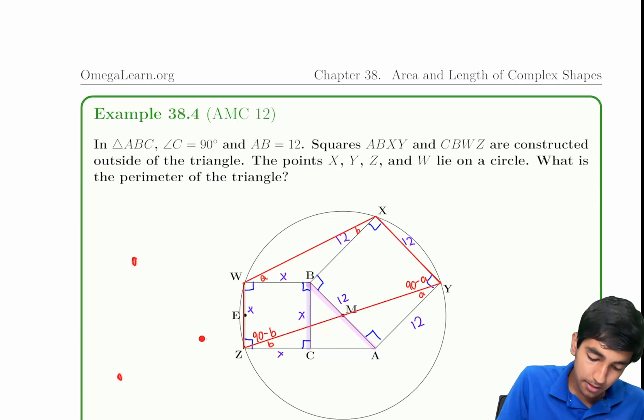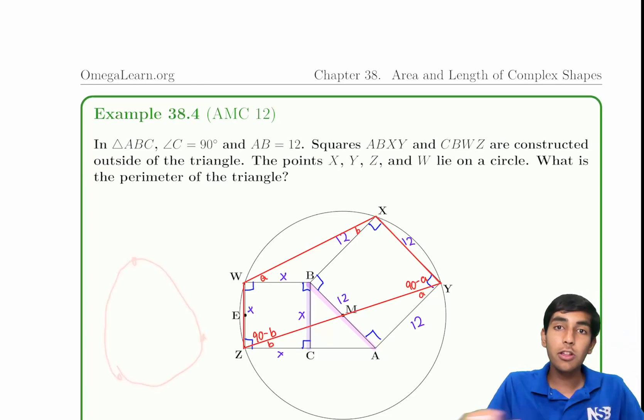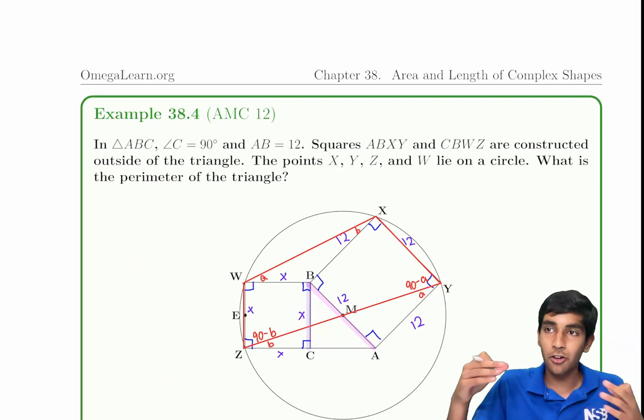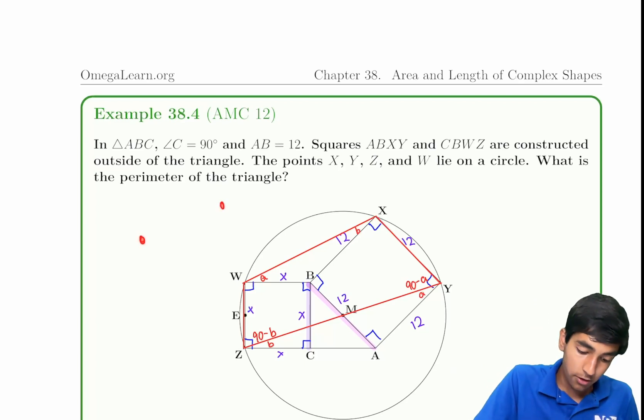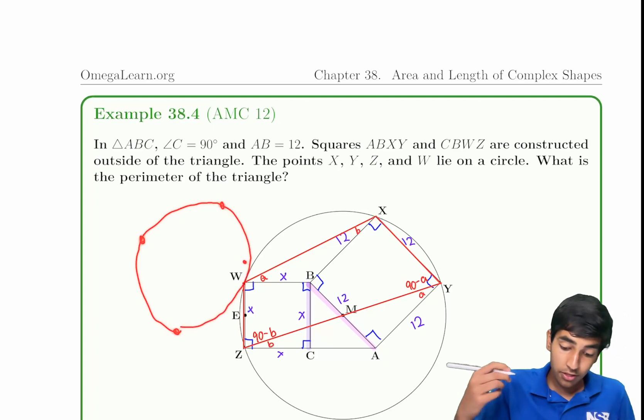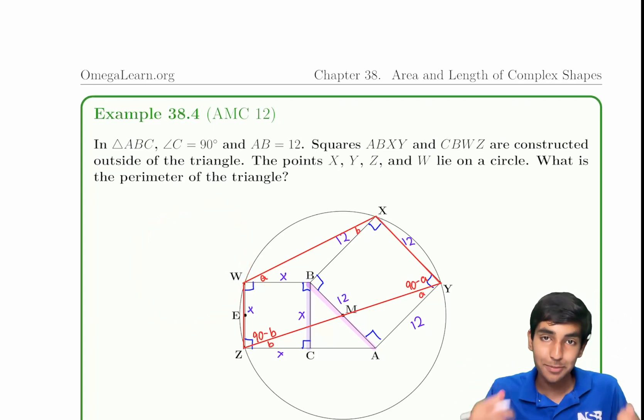If they gave us three points and said they all passed through a circle, that's the most useless information ever, because we can always draw a circle that passes through three points. But if you have four points and you draw a circle around them, not all four points can have a circle around them. So that means a quadrilateral must be cyclic.